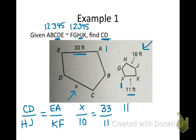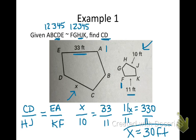So, through cross multiplication, I get 11X equals 330, and dividing both sides by 11 will give me the missing side length I need of 30 feet. Don't forget your unit label.